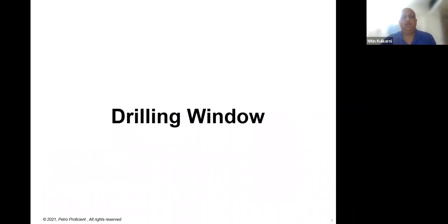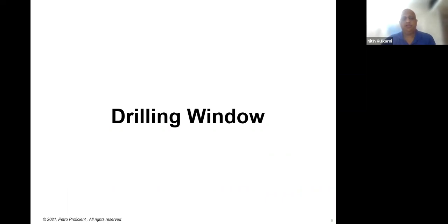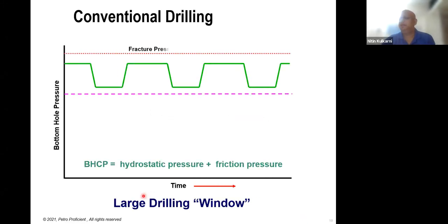Let's talk about the drilling window. The drilling window is commonly used across all disciplines — reservoir engineering, geoscience, and so on. Here you have a basic schematic representation. You have fracture pressure, formation pressure, and the bottom hole pressure shown as a zigzag green line. The zigzag occurs because when you switch off your pumps you lose friction pressure, so you only have hydrostatic pressure during static conditions.